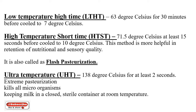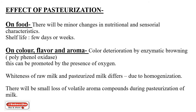Flash pasteurization is the most common method applied to marketed milk. The next method is ultra-high temperature (UHT): milk is heated to 138 degrees Celsius for at least two seconds. This extreme pasteurization kills all microorganisms, keeping milk in a closed sterile container at room temperature.